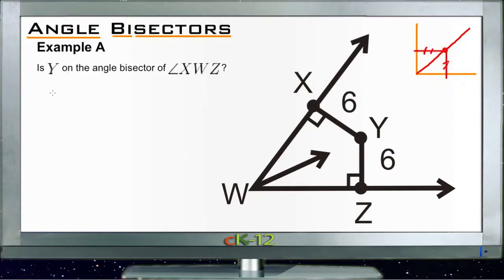Example A says: Is Y on the angle bisector of angle XYZ? We have angle XYZ here and here's our angle bisector. The question is, if we were to continue this ray on up, would Y be on that line? The answer is yes, and we can show that because we have two lines here that are perpendicular to the two other sides of the angle.